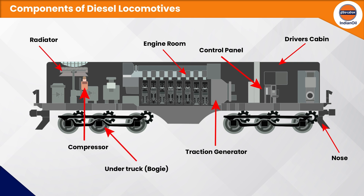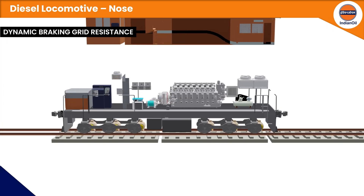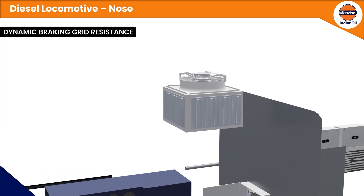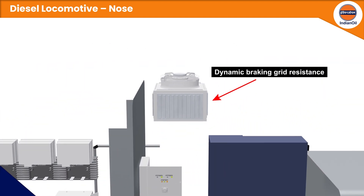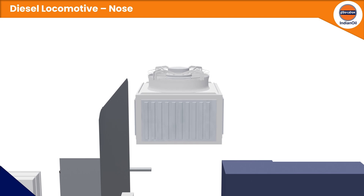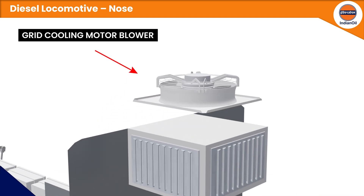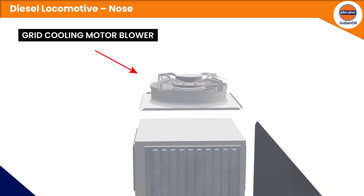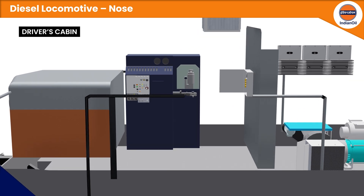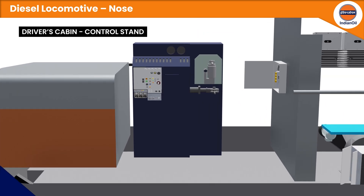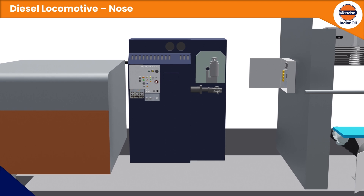The nose compartment comprises dynamic braking grid resistance — these grids get heated up when current passes through them during dynamic braking — and a grid cooling blower motor, which is a DC motor with a blower that cools the dynamic braking grids during dynamic braking.